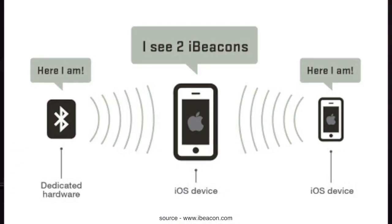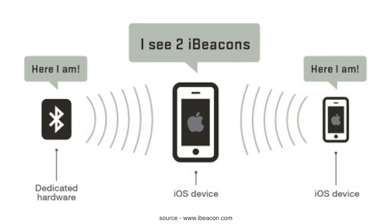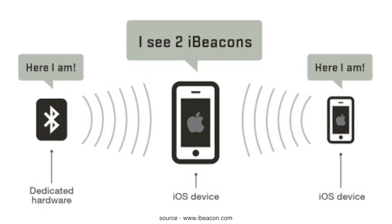Going back to the video — beacons, in a simple manner, are BLE-based devices that constantly emit and advertise data nearby. Our phone, acting as a BLE scanner or BLE receiver, grabs that data and works accordingly. That's the simple functionality of what a beacon is and how it works.